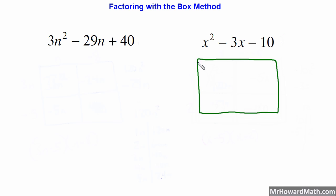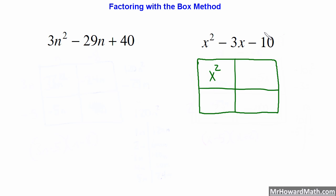We're going to draw a box and split it into four equal parts. The first step is to write our X squared term — our first term — right here in this upper left box. Next step, we want to take our last term, our constant term, and put it in the lower right box. It's important to write it in this descending order: the squared term, then the first degree term, then the constant.